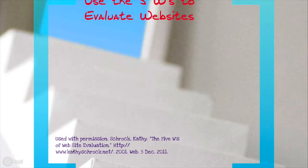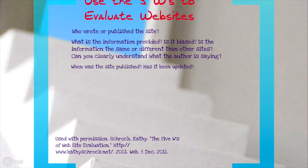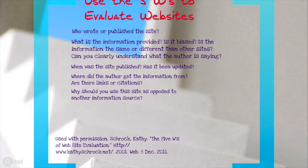It's important to evaluate the websites that you find for the accuracy and reliability of the information, and you can do that using who, what, when, where, why. Ask yourself who wrote or published the site — is this person an expert? What is the information provided — is it biased or opinionated, and is that information the same or different than other sites you found? Can you clearly understand what the author is saying? When was the site published — has it been updated? Sometimes it's important that the information is current. Where did the author get the information from — are there links or citations to reliable sources? Why should you use this site as opposed to another information source — is there a better website or a book? Always be prepared to do another search, and this is a good way to compare whether the information on one website is correct by seeing if it's the same as the other websites you found.